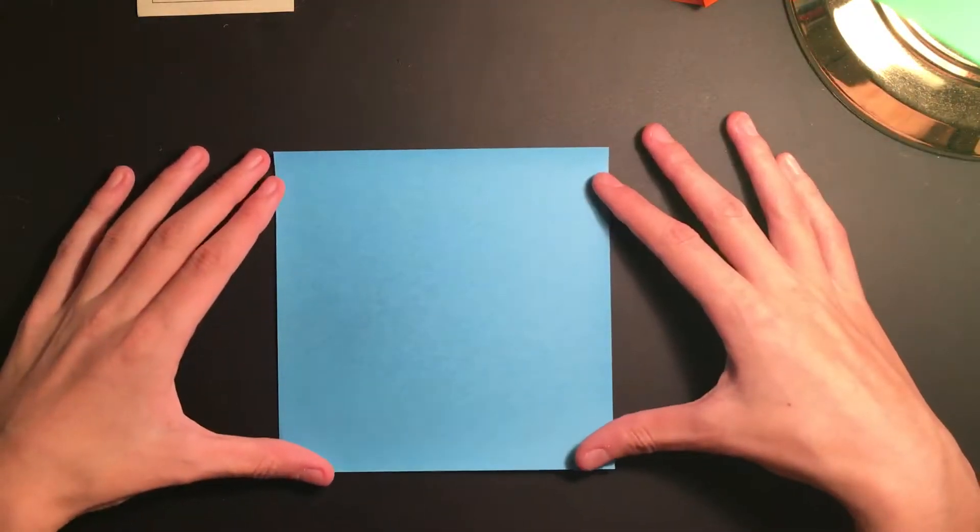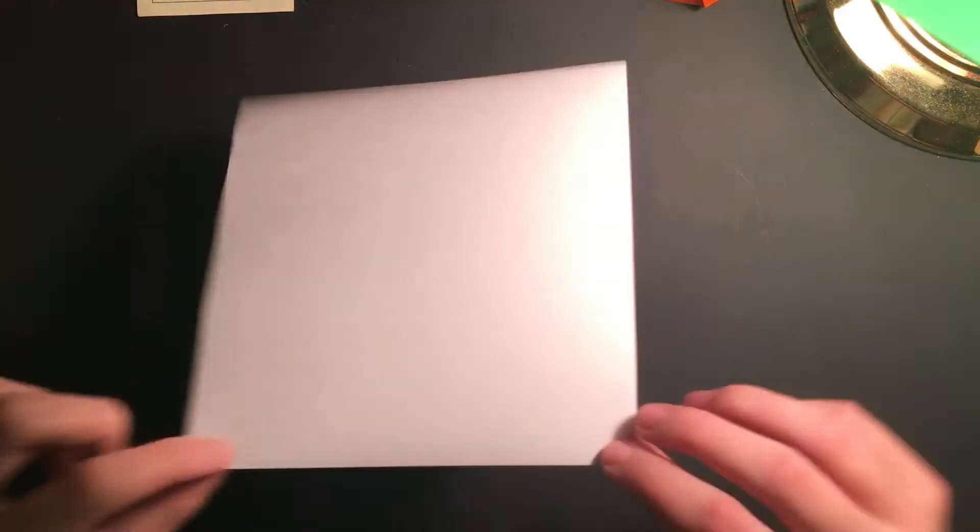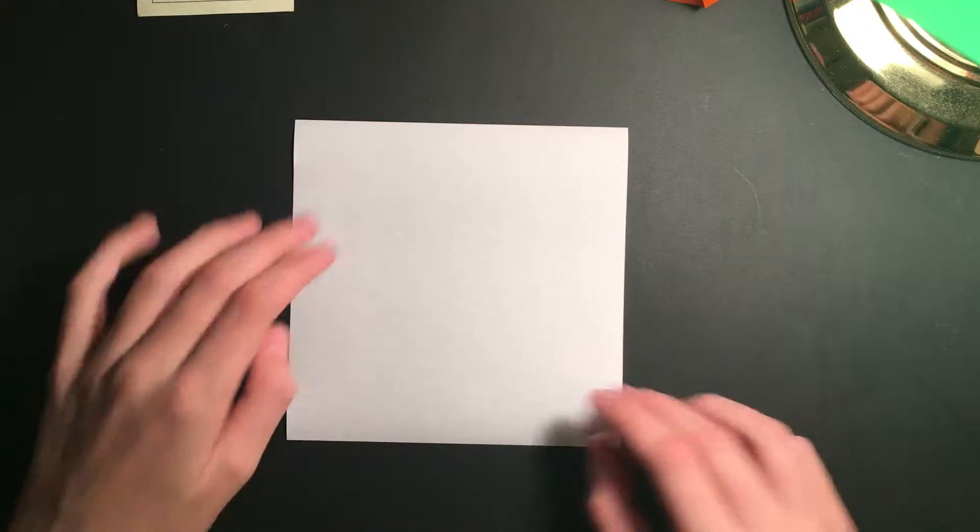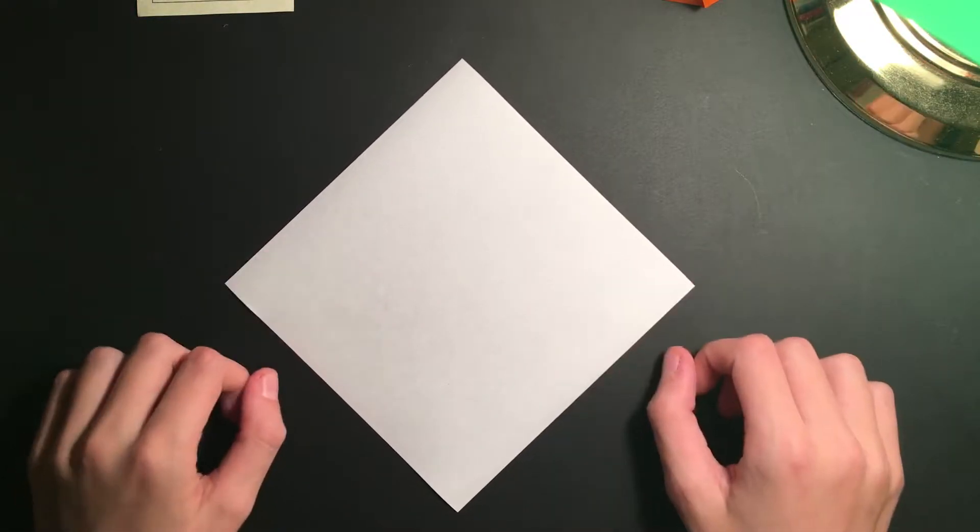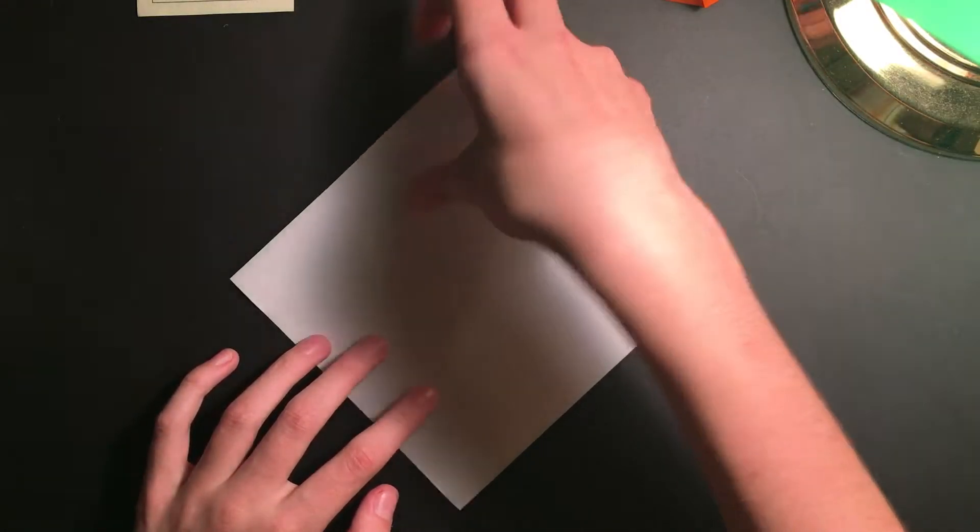So I'm going to be using a 6 inch by 6 inch sheet of origami paper, color on one side, white on the other. For this tutorial, we're going to be starting with the white side up, and turn it so that it looks like a diamond. Go ahead and bring the top point down to the bottom point and crease sharply.